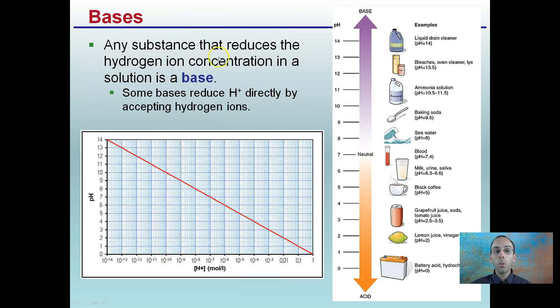Bases. Any substance that reduces the hydrogen ion concentration in a solution is a base. Some bases reduce hydrogen ions directly by accepting hydrogen ions. Examples of base solutions: baking soda pH around 9.5, bleaches, drain cleaners, ammonias. Seawater is actually slightly basic. These are examples of solutions that are basic.